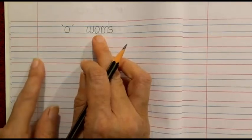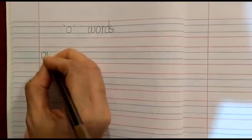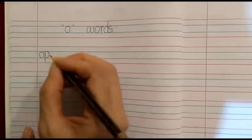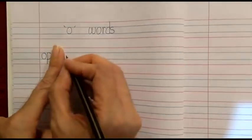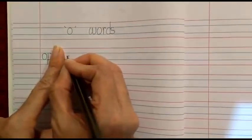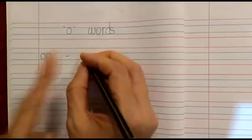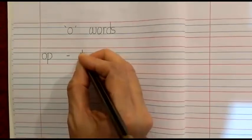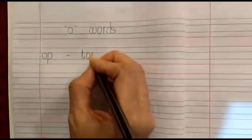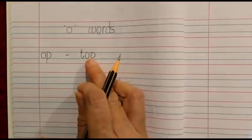Now, here we will write next to the margin. Please read it: O. After that, we will place our index finger, then we are going to put a dash. Again, next to the dash, we are going to place our index finger and we will write the word: T, Op — Top. You all are requested to read the word the way I am reading in this video.